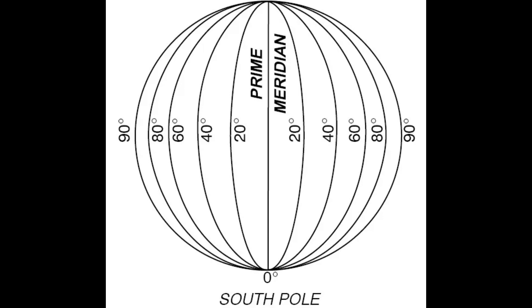Therefore, there are lines of longitude representing 1, 2, 3 degrees and so on up to 180 degrees. The image displays the 20, 40, 60, 80, and 90 degree lines of longitude east of the prime meridian.